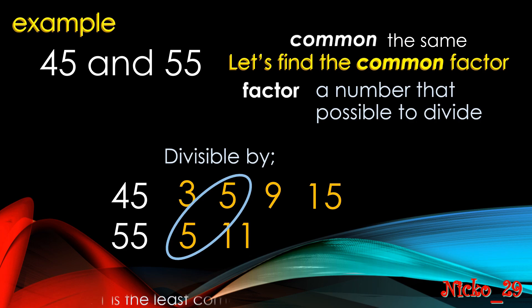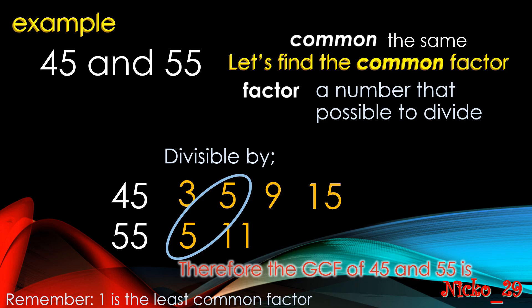Remember that 1 is the least common factor because all numbers are divisible by 1, so we don't usually list it — but it's automatically possible to divide any number by 1. Therefore, the GCF of 45 and 55 is 5. The method we used here is the listing method — we listed all possible divisors of 45 and 55 and looked for their common factor.